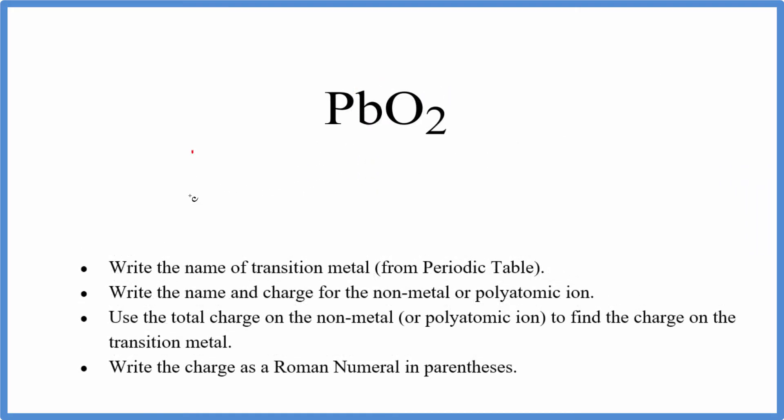For PbO2, we have lead, and oxygen becomes oxide. We know oxygen is minus 2, and 2 times minus 2, that gives us a minus 4. That means lead here must be a plus 4, and we write parentheses, and we write IV, which is the Roman numeral for 4. The name for PbO2 is lead 4 oxide.